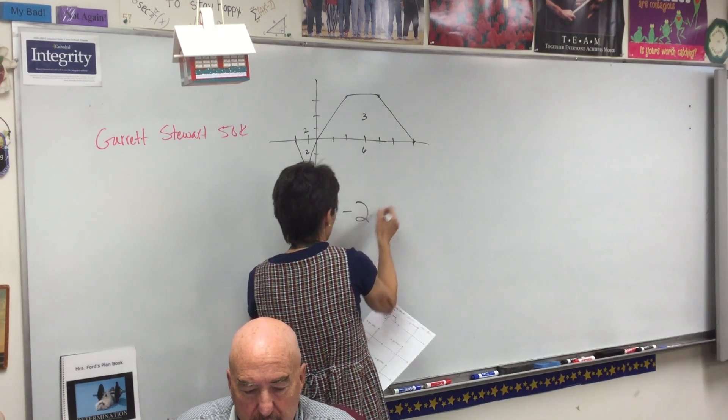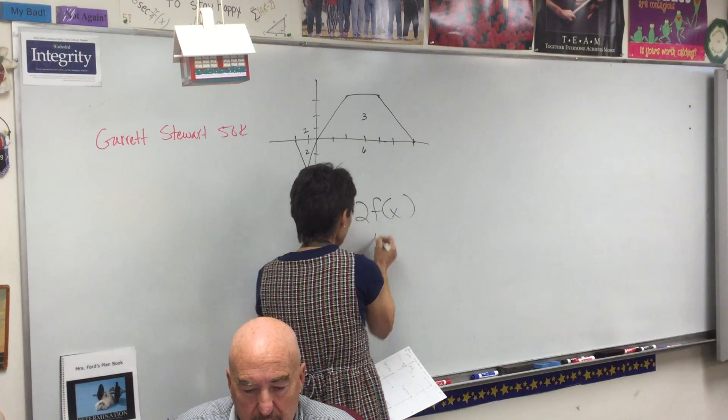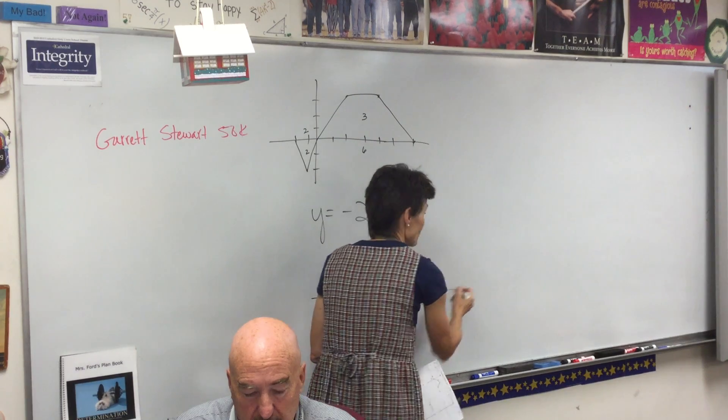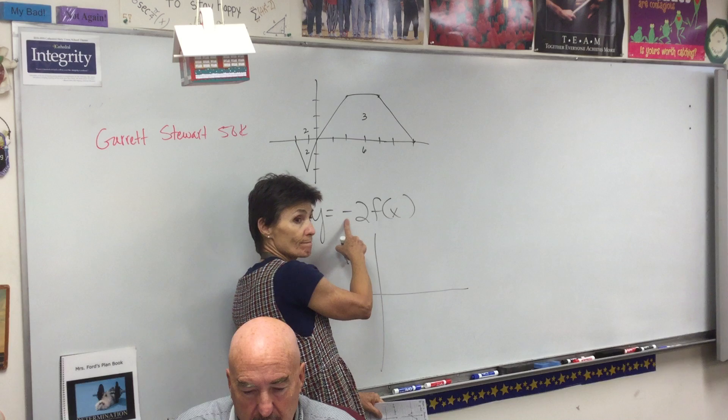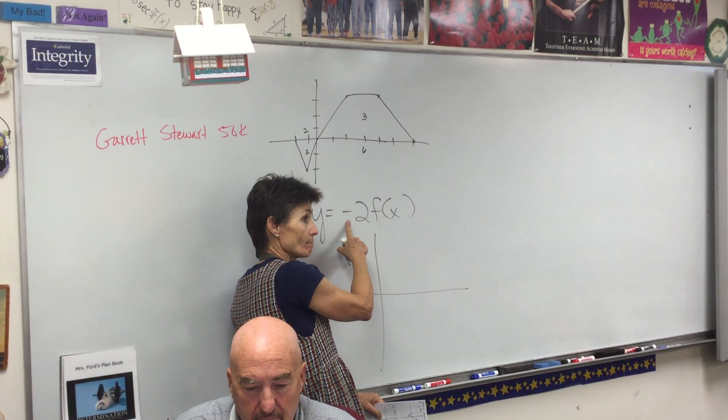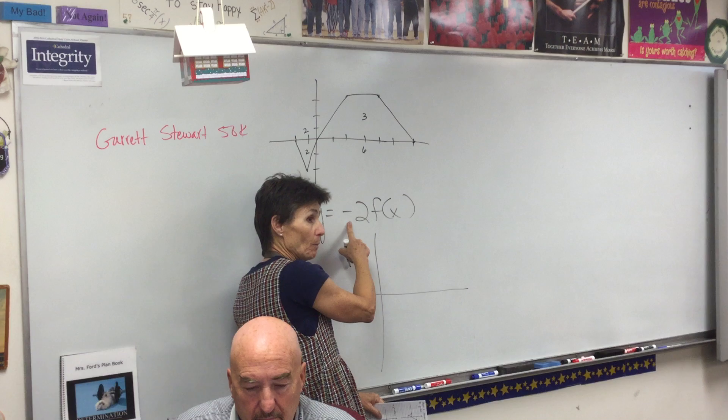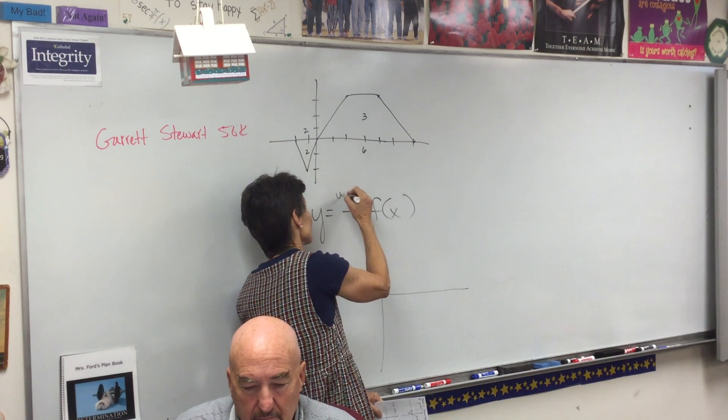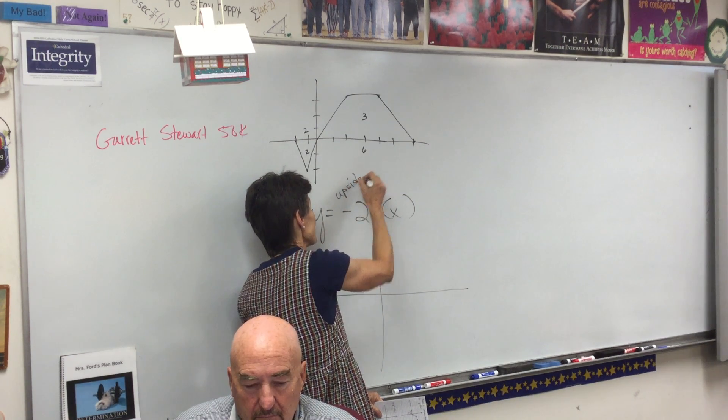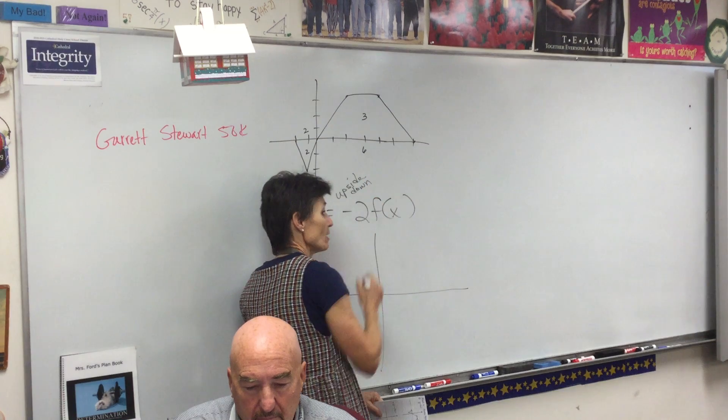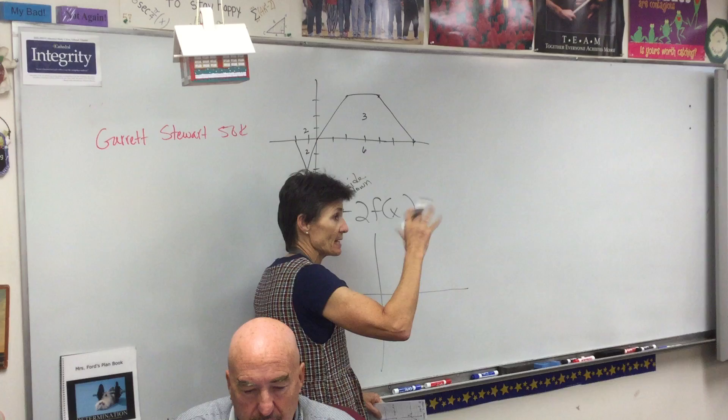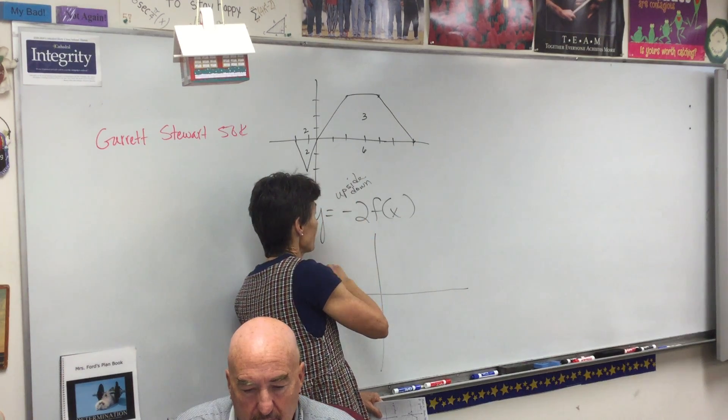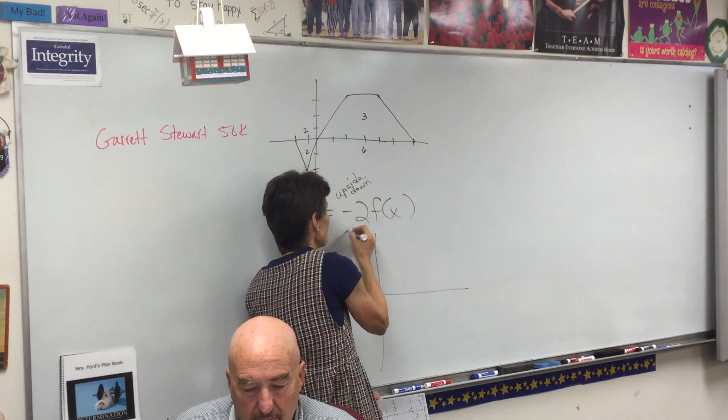Alright, so problem A. What is happening in this problem? What does that negative do? It flips it. It flips it how? Upside-down. That's an upside-down. You've got to be careful because there's two ways to flip it, right? Sideways and upside-down. So this is an upside-down one. What does the two do? Multiplies the height.